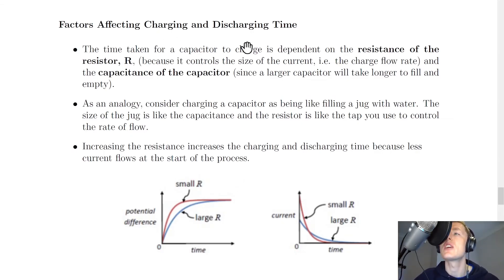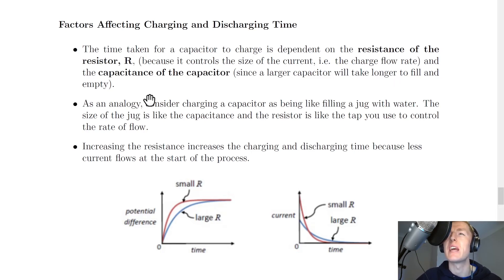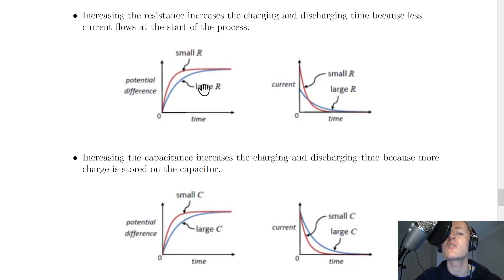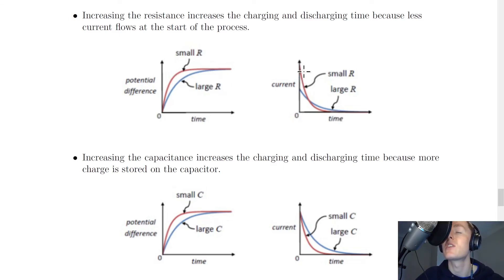There are three factors affecting charging and discharging time. The first two are: the resistance of the resistor R, which controls the size of the current (i.e. the charge flow rate), and the capacitance of the capacitor, since a larger capacitor takes longer to fill and empty — like filling a jug with water where capacitance is the jug size and the resistor is the tap. Increasing resistance increases charging and discharging time. For smaller resistance, it takes less time to reach maximum voltage and the starting current is higher; for larger resistance the maximum current is smaller and it takes longer to decrease to zero.